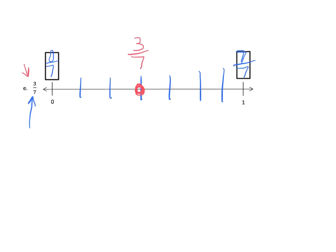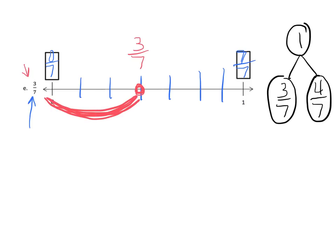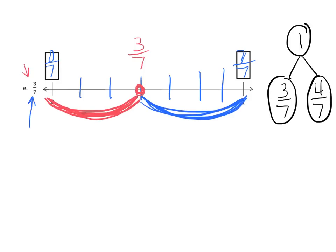For our number bond, here's our one whole, and we have three-sevenths. What's the other number? It's going to be four-sevenths. These three intervals indicate three-sevenths, and these four indicate four-sevenths. You can count to verify: one-seventh, two-sevenths, three-sevenths, four-sevenths. That's how we got our number bond of three-sevenths and four-sevenths.